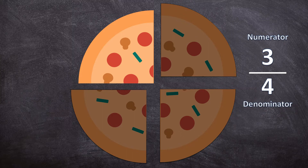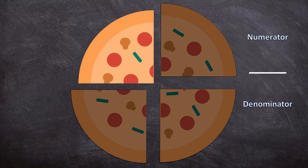Now let's take the same pizza. We said we ate three out of four parts, but let's ask this question differently. What fraction of the pizza is left over? What didn't I eat yet? The fraction is going to look different — it's the same pizza but my question is different. So the fraction of the pizza left over is one out of four pieces.